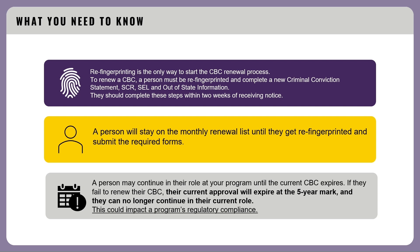Number 2: A person will stay on the monthly renewal list until they get re-fingerprinted and submit the required forms. Number 3: A person may continue in their role at your program until the current CBC expires. If they fail to renew their CBC, their current approval will expire at the five-year mark and they can no longer continue in their current role. This could impact a program's regulatory compliance.